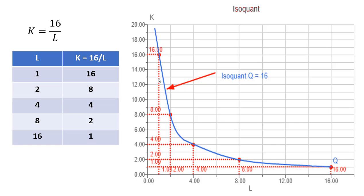Just finding these coordinates here. L is 1, K is 16, that's a point up here. This is one point on the isoquant. L is 2, K is 8, another point on the isoquant. L is 4, K is 4, that's right here.